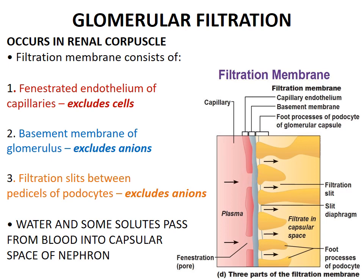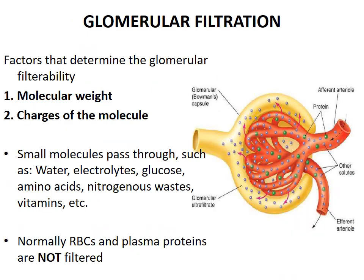Not every substance is allowed to pass through filtration. In the filtrate, you will find no cells and no proteins — it contains certain ions and mostly fluid. It is a selectively permeable membrane, through which water and some solutes pass from blood into the capsular space of the nephron.